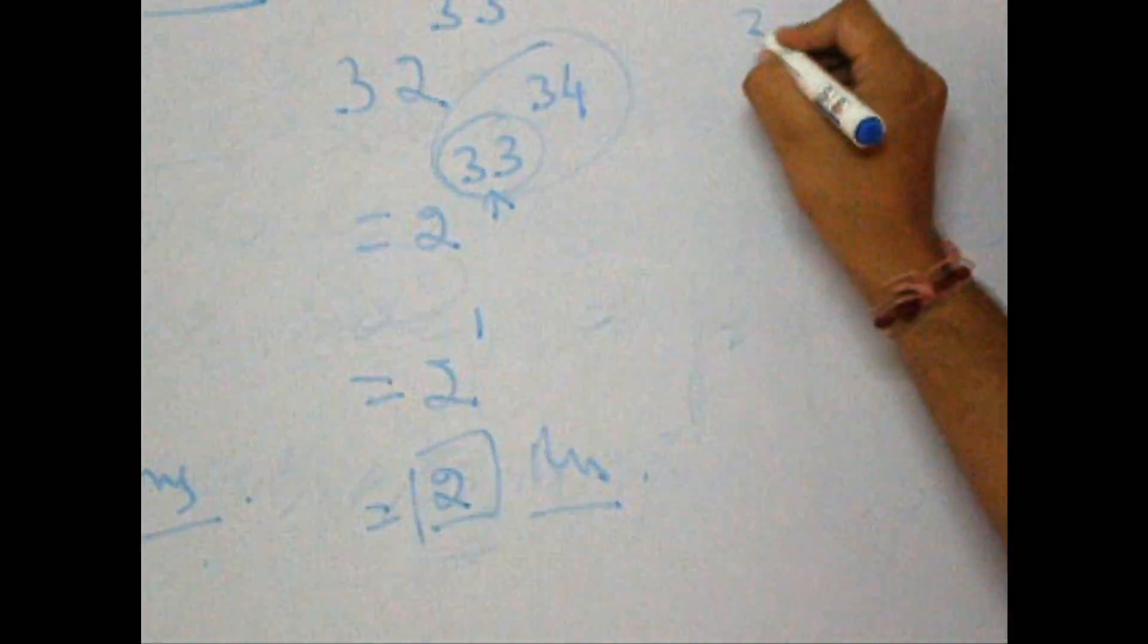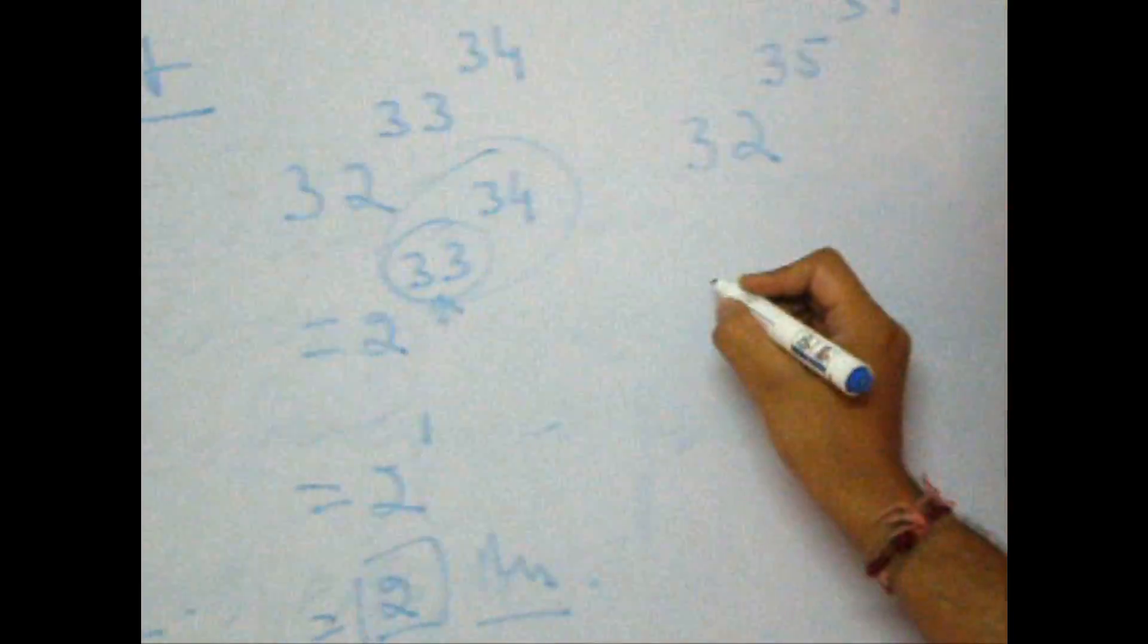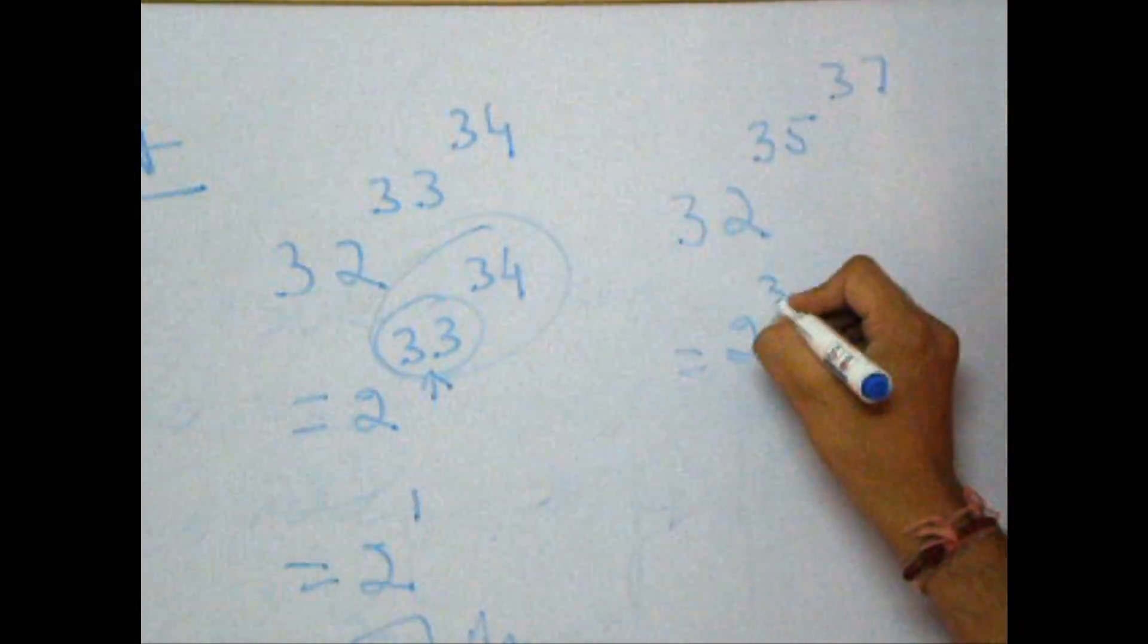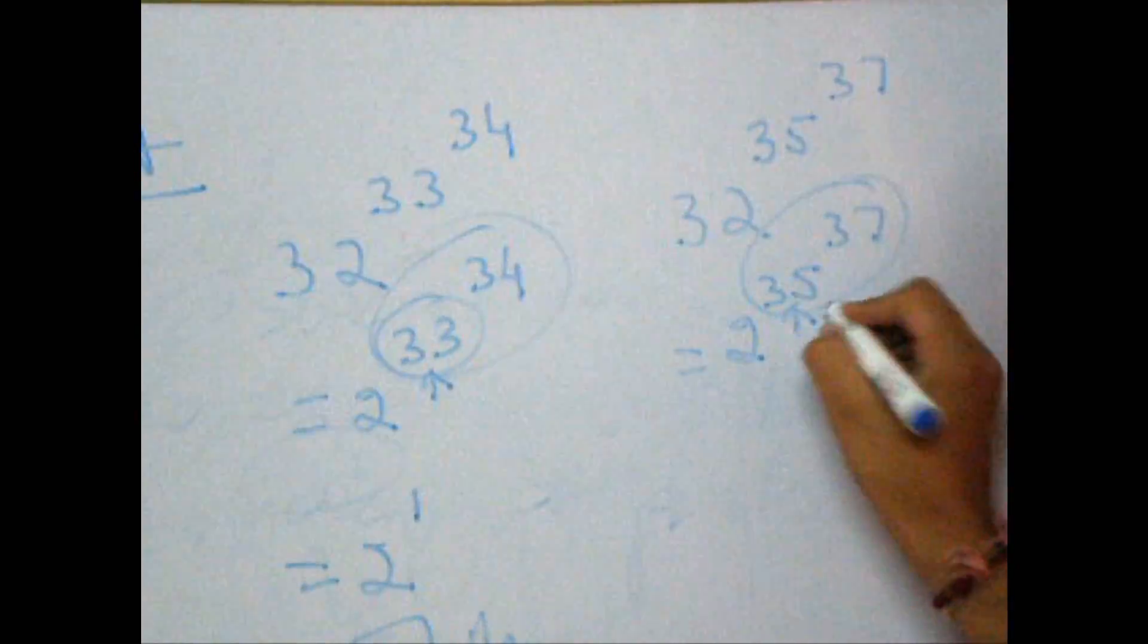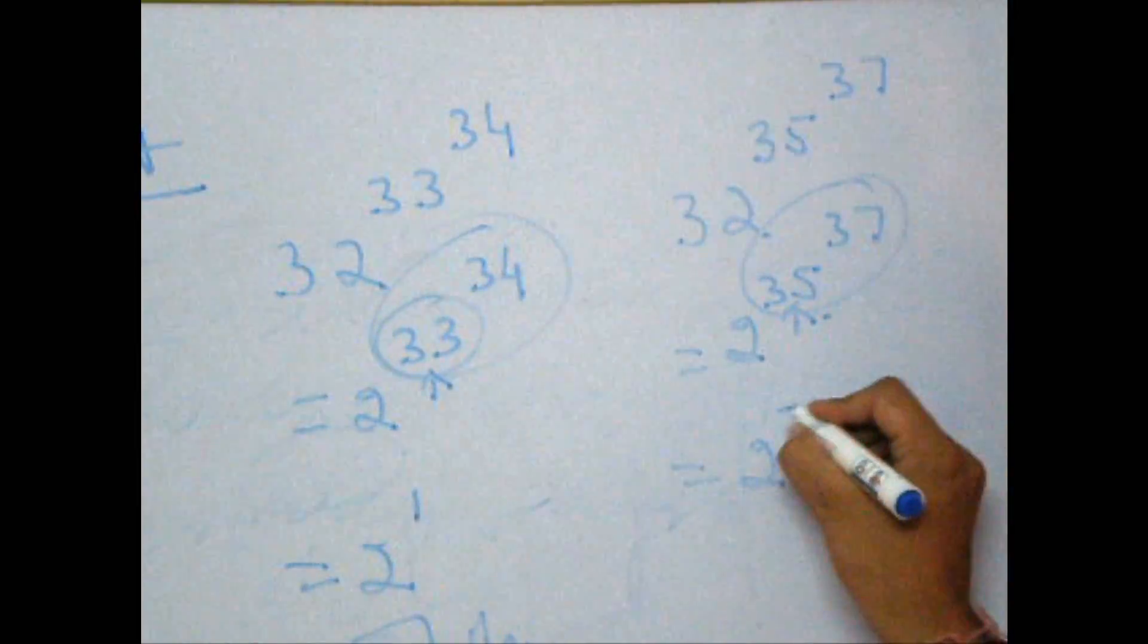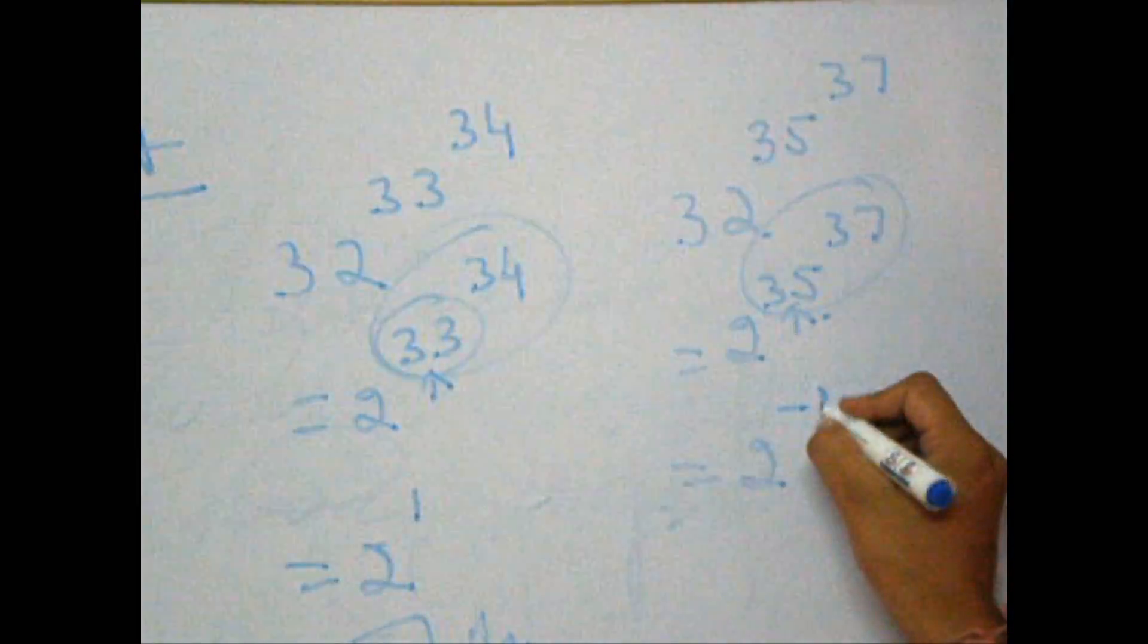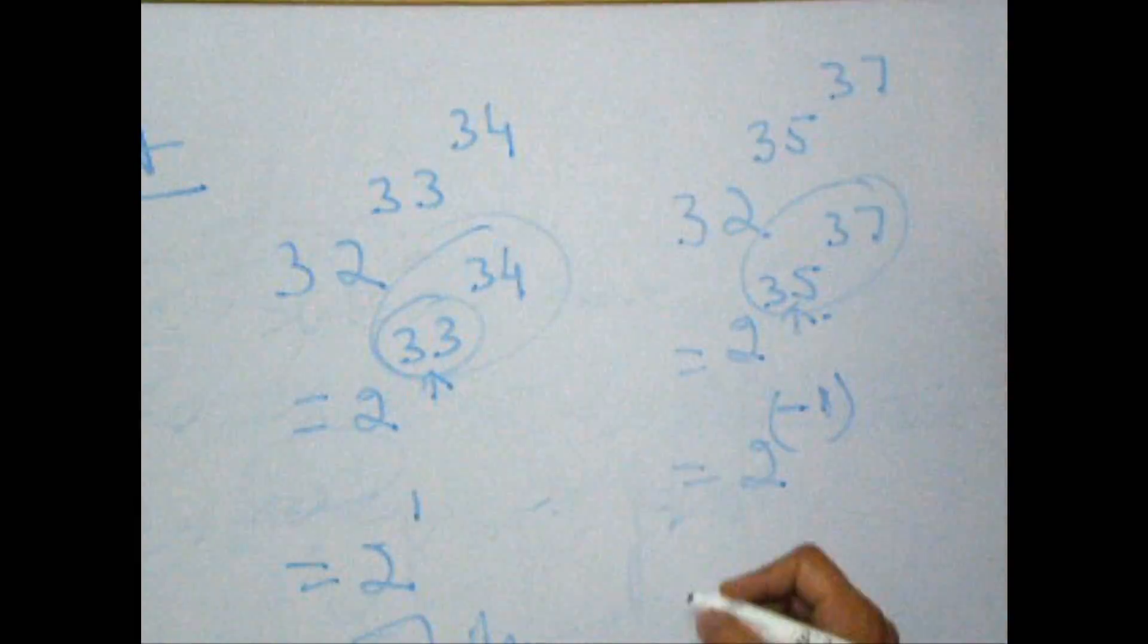Let's take one more. 32 to the power 35 to the power 37. This is 2 to the power 35 to the power 37. This power starts at 35. Let's divide 35 by 4. The remainder is 3, but I am calling it minus 1. Why? Remainder 3 means surplus of 3. Remainder minus 1 means deficit of 1. That's one and the same thing.